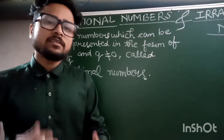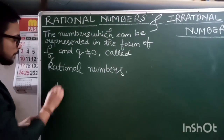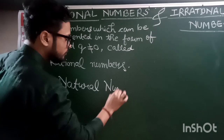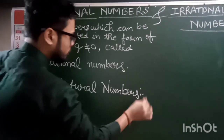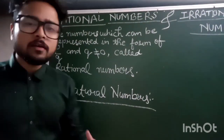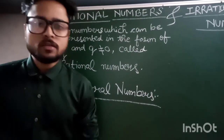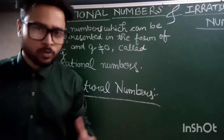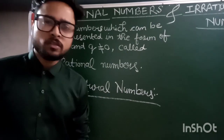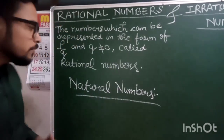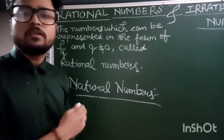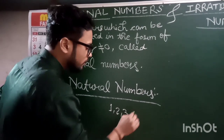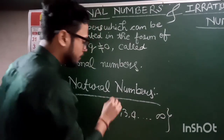To understand this whole concept, let's start with natural numbers. What are natural numbers? All the counting numbers are natural numbers. We have studied about this earlier — 1, 2, 3, 4, and so on till infinity.